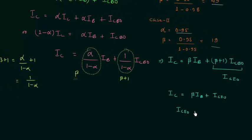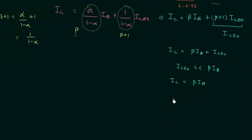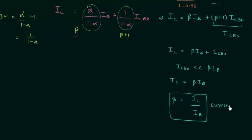ICEO, the reverse saturation current or leakage current, is much smaller than beta times IB. So we can neglect this term and we have IC equal to beta times IB. This implies beta is equal to IC divided by IB. Beta is called the current amplification factor, and it is equal to IC divided by IB, ranging from 50 to 400.